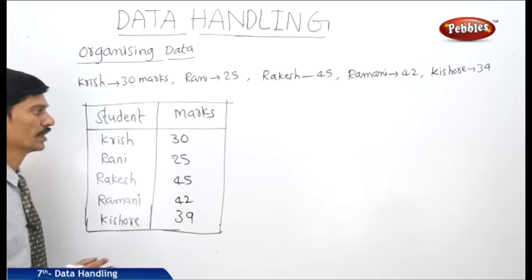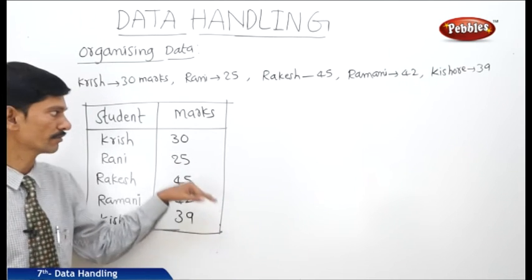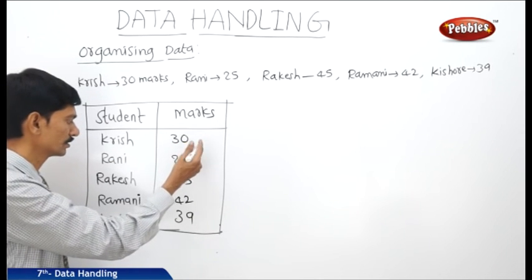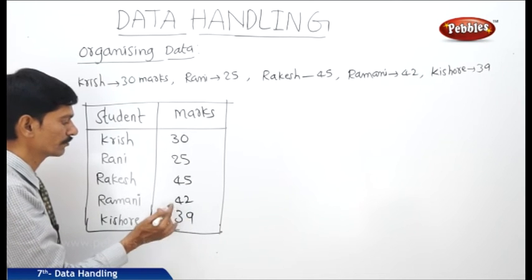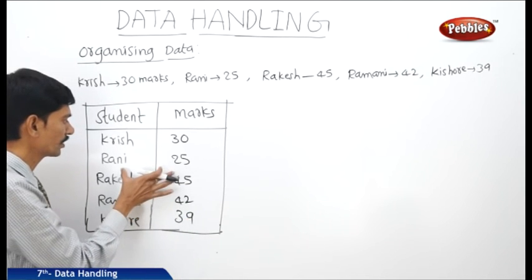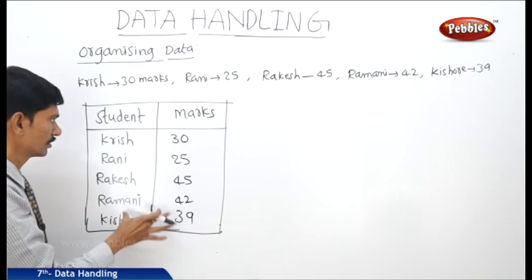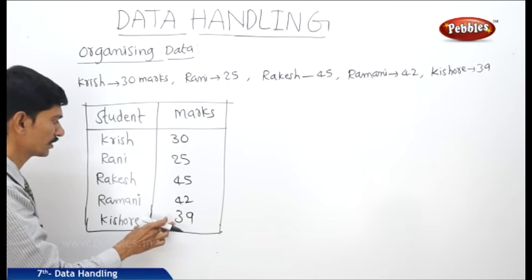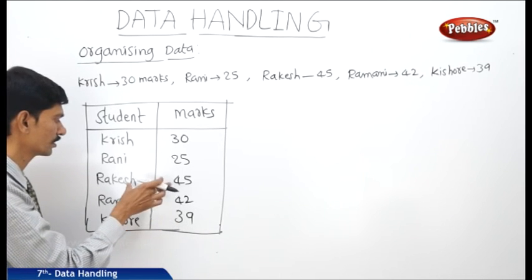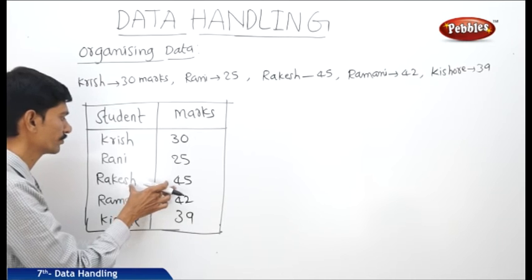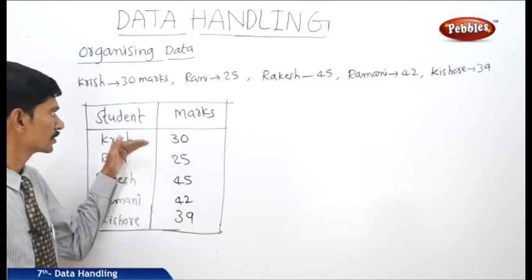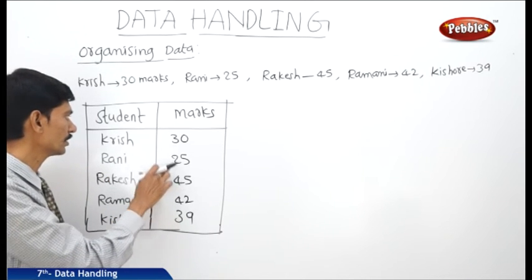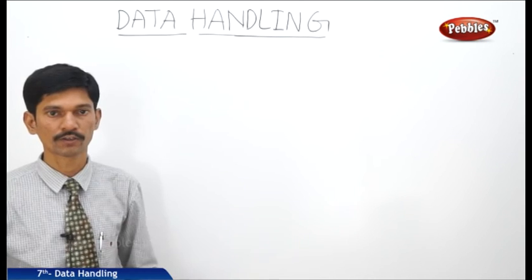Now the same table can be represented either in ascending order or in descending order of the marks. If you arrange all the students in ascending order of the marks then we get first Rani with 25, then Krish with 30 marks, then Kishore with 39 marks, then Ramani with 42 marks, and at last Rakesh with 45 marks. If you arrange the students in descending order of the marks then we get first Rakesh and last Rani.